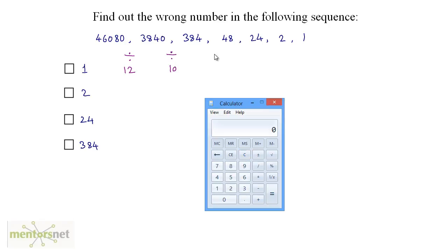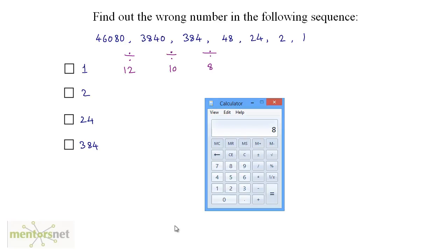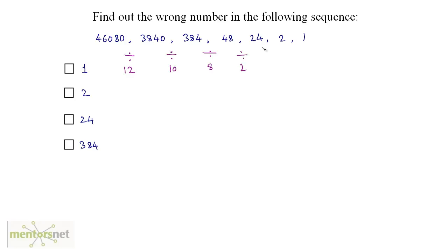The relation between 384 and 48: dividing 384 by 48 gives 8, so we divide 384 by 8 to obtain 48. Then 48 divided by 24 gives 2, so 48 divided by 2 gives 24, and 24 divided by 12 should give 2. A pattern is forming.